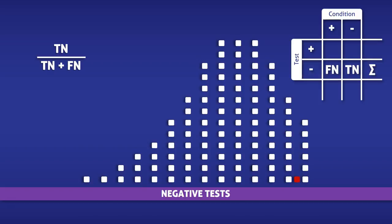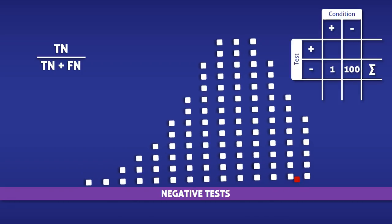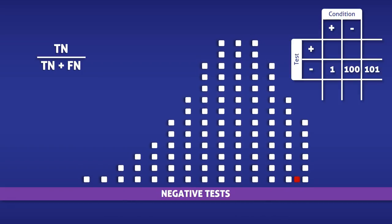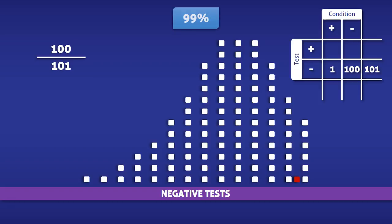Counting the squares, we find that there is a single false negative, 100 true negatives, and 101 negative tests in total. All that's left to do is enter the data into the equation. In doing so, we find that the negative predictive value is 100 over 101, which is 99%.